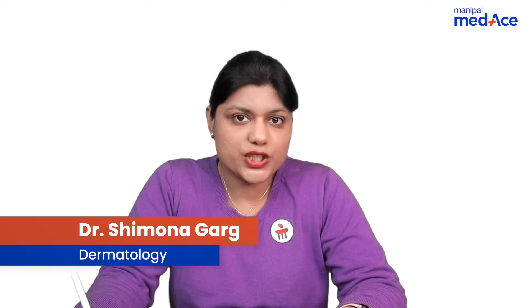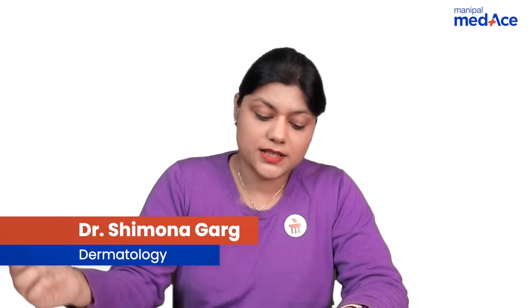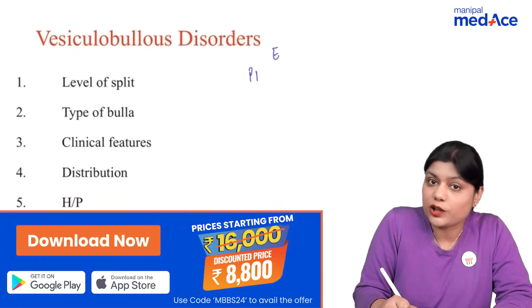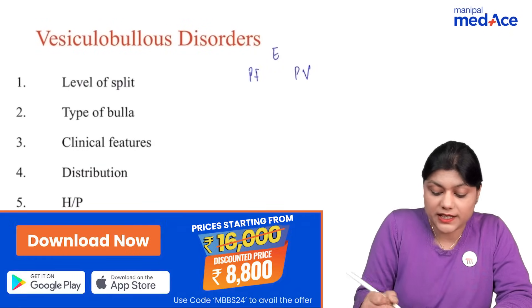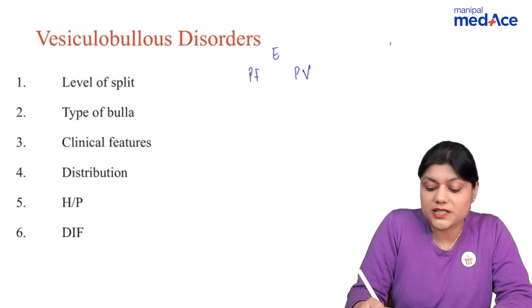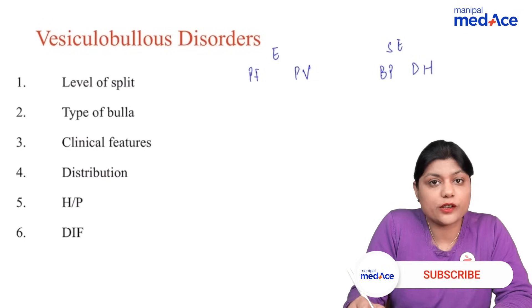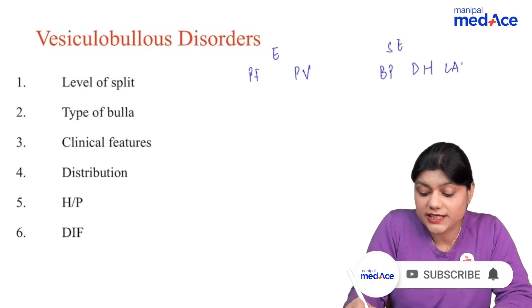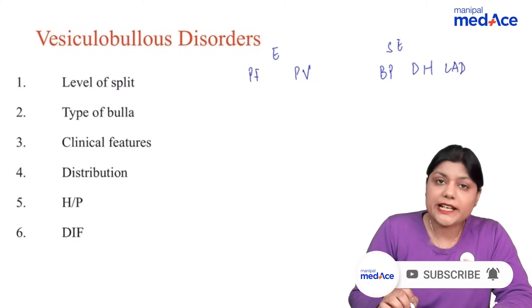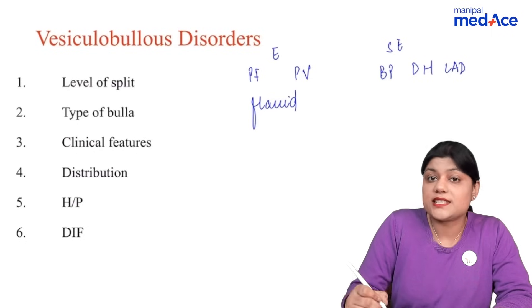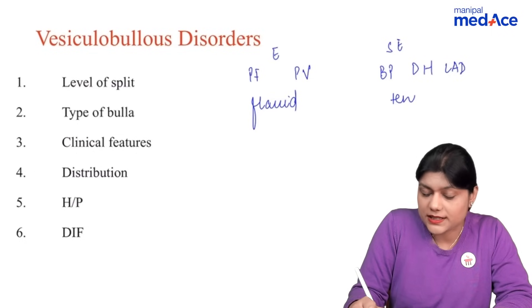Let's quickly make the diagnosis of vesiculobullous disorders. First you need to see the level of the split. If it is in the epidermis then it can be pemphigus foliaceus or pemphigus vulgaris. If it is subepidermal it can be bullous pemphigoid, dermatitis herpetiformis, or linear IgA disease. The type of bulla in epidermal disease is flaccid, and in subepidermal it is tense.